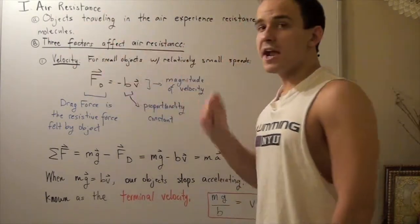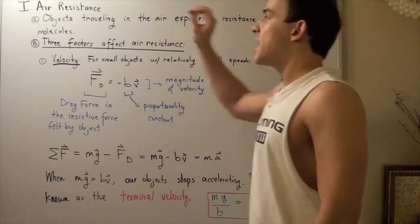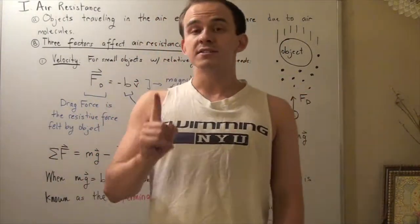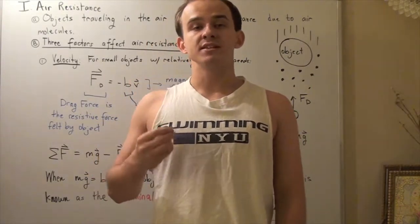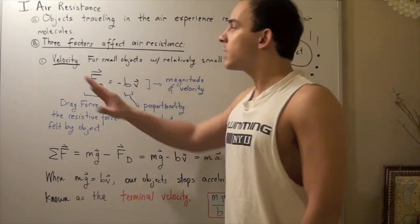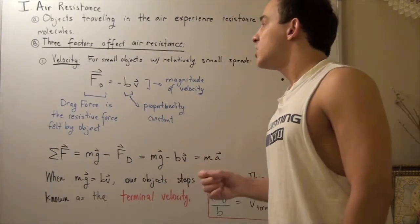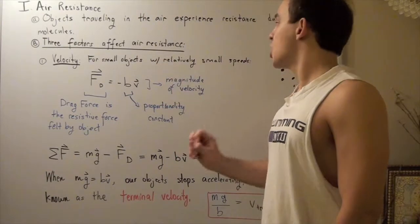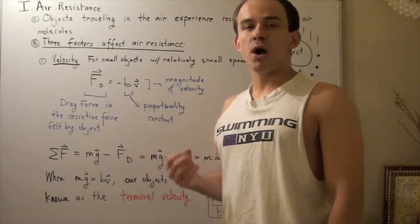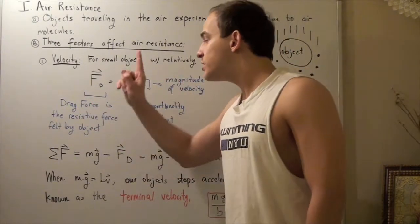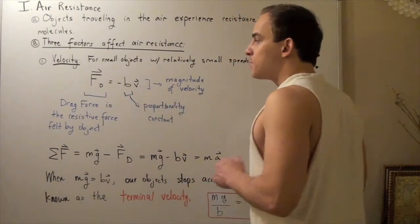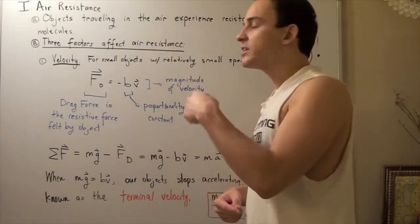Objects traveling in air experience resistance forces due to the air molecules. We spoke about projectile motion and neglected air resistance, but air resistance does exist in everyday life, so it's important to study what it is and how it affects the motion of objects. For small objects with relatively small speeds, we can use the drag force formula to approximate the force created by the air molecules. The negative sign means the force acts in the opposite direction of velocity.